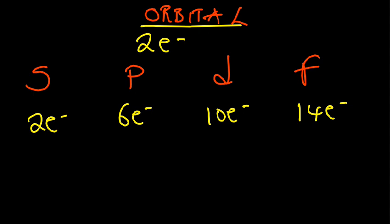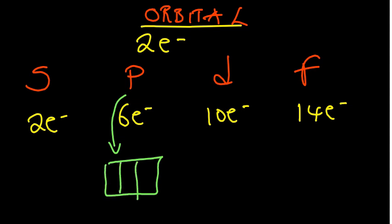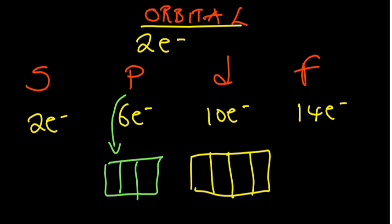Every orbital accommodates a maximum of two electrons. A p orbital has three sub-orbitals within it, which is why it holds six electrons. The d orbital has five sub-orbitals, giving it 10 electrons. The f orbital has seven sub-orbitals giving 14, and the s orbital has a single sub-orbital, that's why we have these numbers of electrons.